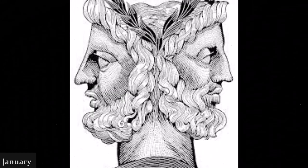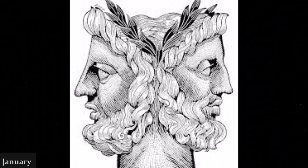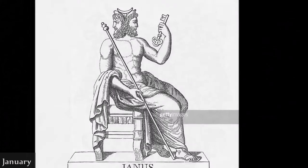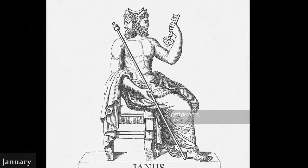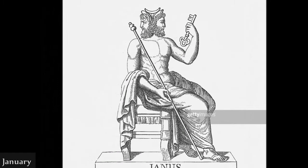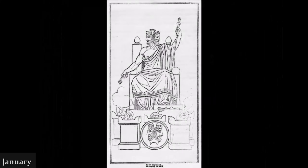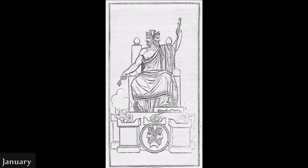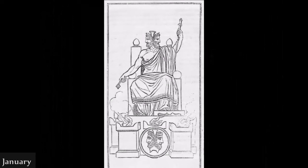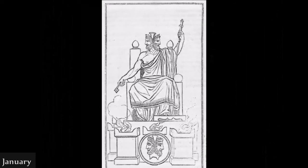January is named after the Roman god Janus. In ancient Roman religion and myth, Janus is the god of beginnings, gates, transitions, time, duality, doorways, passages, frames, and endings. He is usually depicted as having two faces. It is conventionally thought that the month of January is named for Janus, but according to the ancient Roman Farmers' Almanac, Juno was the tutelary deity of the month.